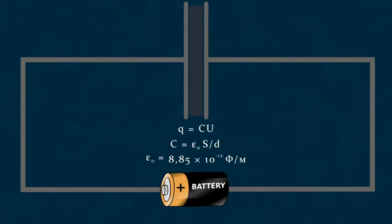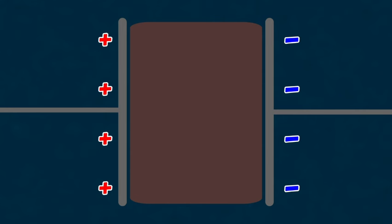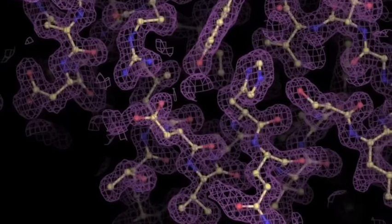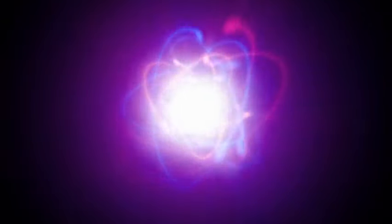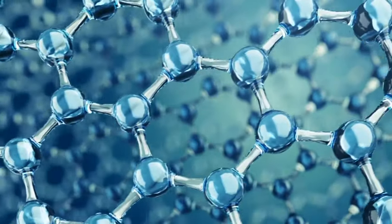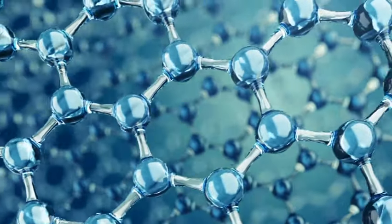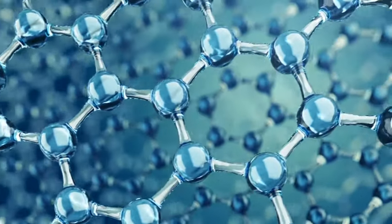It is worth noting that due to the small value of the electric constant, achieving a substantial amount of charge stored in such a capacitor will not be easy. Fortunately, the capacitance of the capacitor can be significantly increased by choosing the right material for our insulating spacer. Above, we haven't discussed how this spacer reacts to the electric field that arises between the capacitor plates, assuming it to be entirely electrically indifferent, as if the dielectric material were completely devoid of electric charges. In real dielectrics, of course, this is not the case. All substances are composed of molecules, molecules of atoms, and atoms of positively charged nuclei and negatively charged electrons.